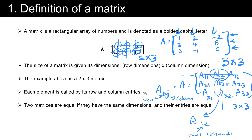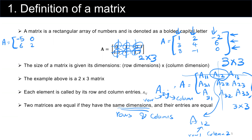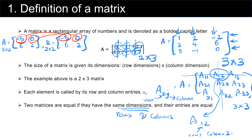Two matrices are equal if they have the same dimensions — the same number of rows and columns — and their corresponding entries are equal. For example, matrix A equals [-5, 0; 6, 2]. Both matrices here are 2 by 2, so they have the same dimension, and the corresponding elements are equal: -5 equals -5, 0 equals 0, 2 equals 2, and 6 equals 6. So matrices A and B are equal.